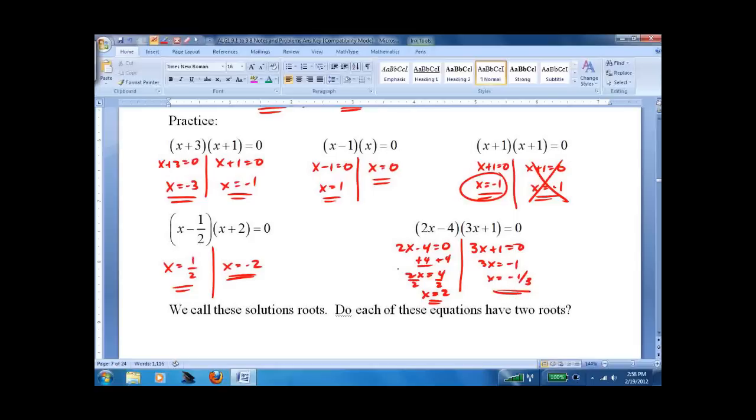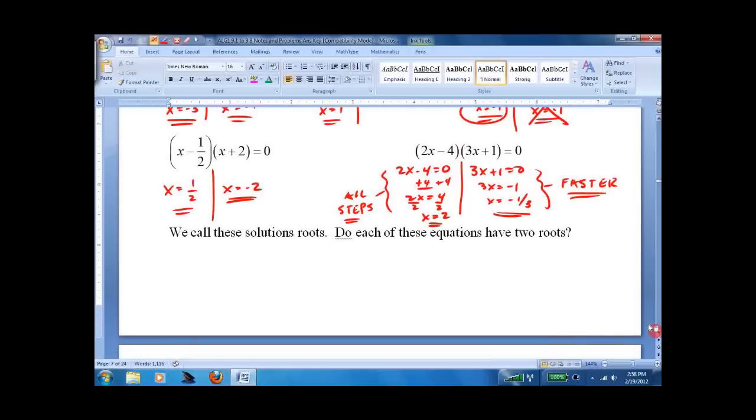So notice, this has all the steps, and this does not. And I did this one faster. Please look for the patterns. It can make your life a lot easier. You just look at a problem and say, oh, that's going to be negative 1 third. Oh, that's going to be 4 over 2 is 2. Definitely want to save time if you can, because this is going to be the last step of a multi-step problem.